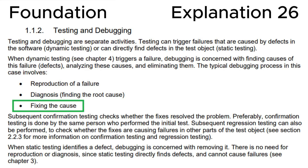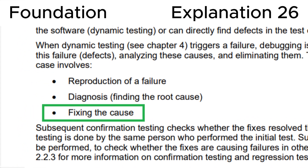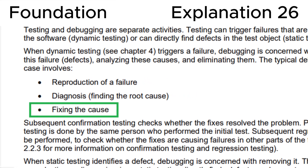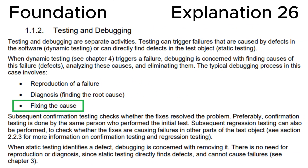A more accurate hint matching the correct answer is in the ISTQB syllabus: reproduction of a failure, diagnosis, finding the root cause, and fixing the cause. Our correct answer B — includes the repair of the cause of a failure — means the same as fixing the cause. I sincerely believe that you are on the right path and won't miss this unique opportunity to prepare for the ISTQB foundation level exam very thoroughly, according to my YouTube channel. Never give up.